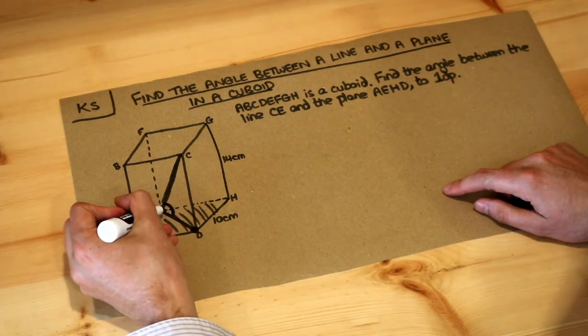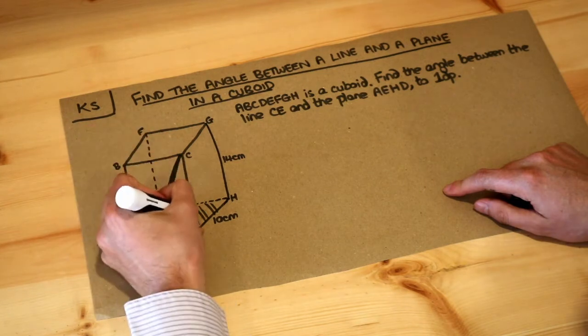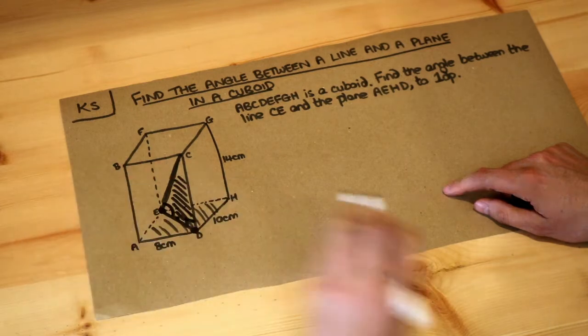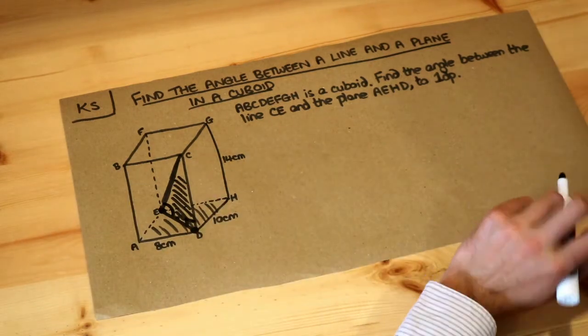Now if you think about it, because this is horizontal and that's going up vertically, that will be a right angle, so this triangle here is a right angle triangle, sort of hovering in 3D.